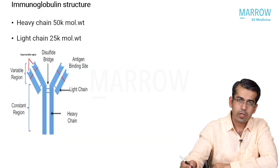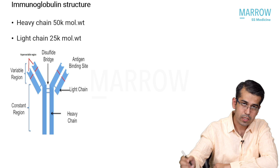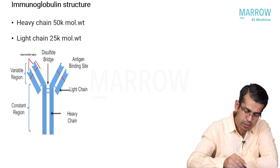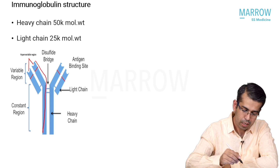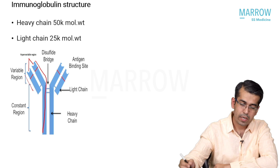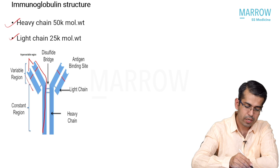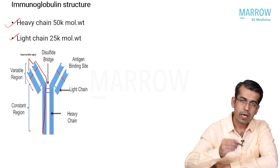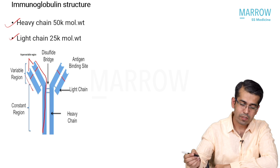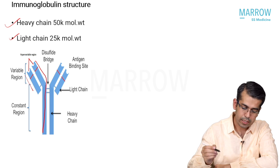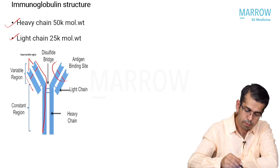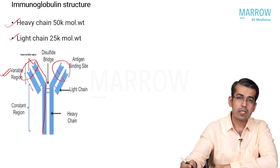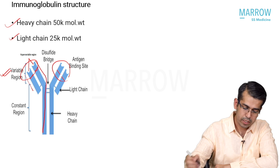An immunoglobulin has two components: the inner, longer one is the heavy chain and the outer, shorter one is the light chain. The light chain has a molecular weight of 25,000 Daltons whereas the heavy chain is twice the size at 50,000 Daltons. Both heavy and light chains have a variable portion and a constant portion. The distal-most part, which is the antigen-binding part, constitutes the variable region of both heavy and light chains.